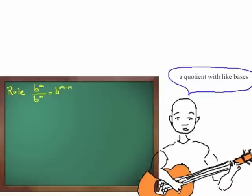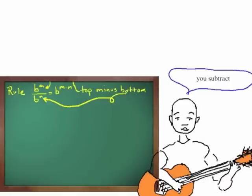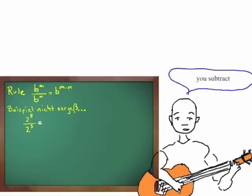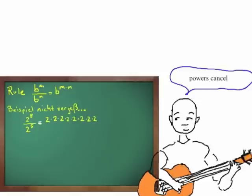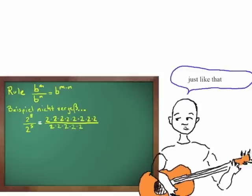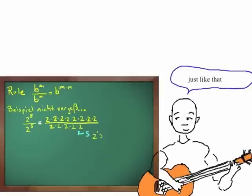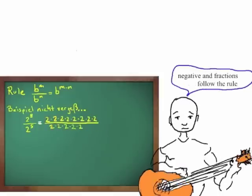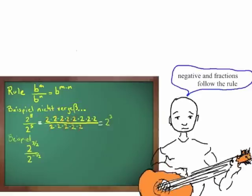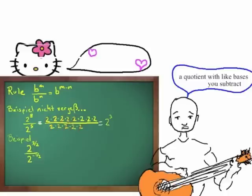A quotient with like bases, you subtract. Powers cancel just like that. Negatives and fractions follow the rule — a quotient with like bases, you subtract.